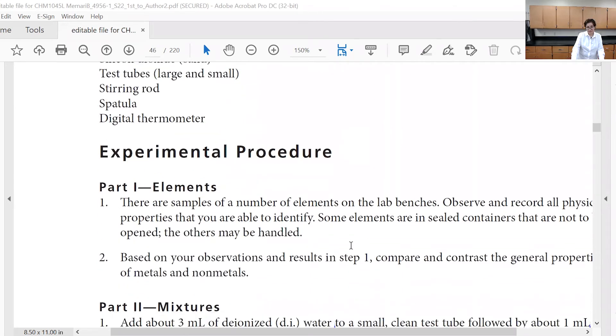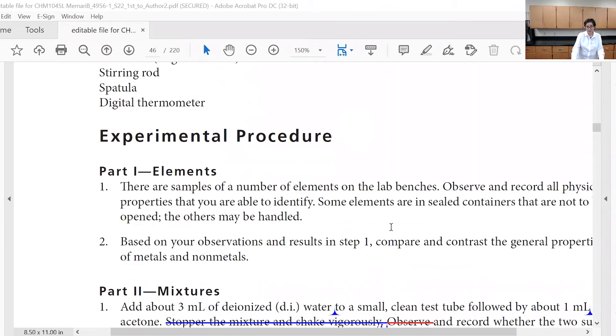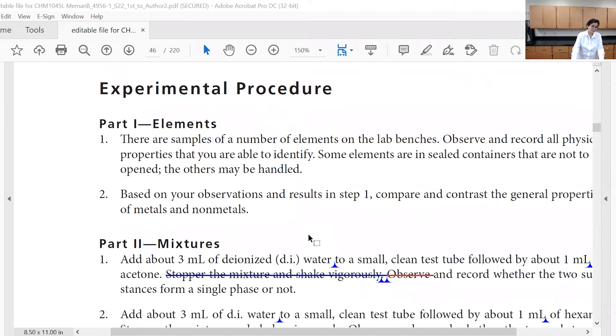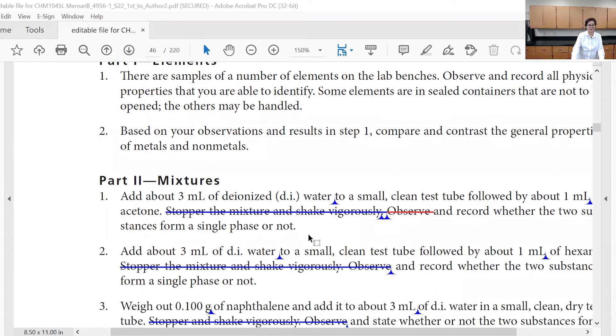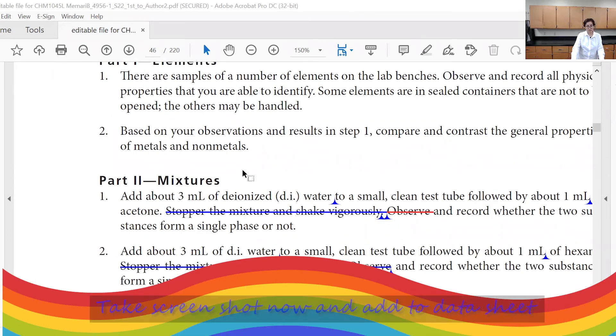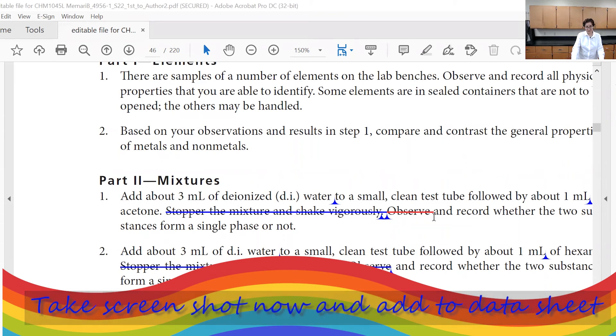When you perform this experiment in part one, you're going to get samples and you're going to watch the video. You will see that you would classify them based on their physical appearance. If they are metal or non-metal, then you would do mixing of the chemicals.